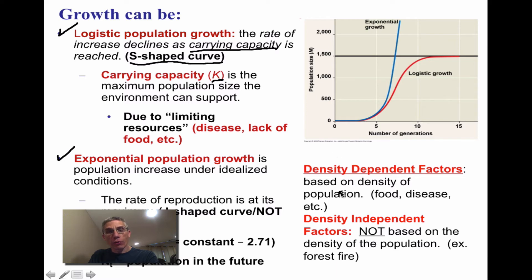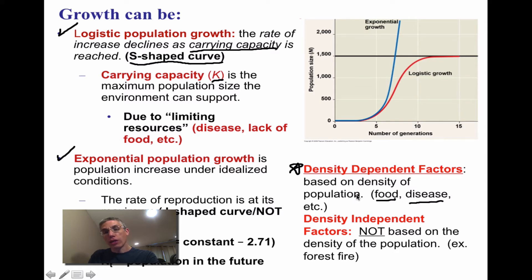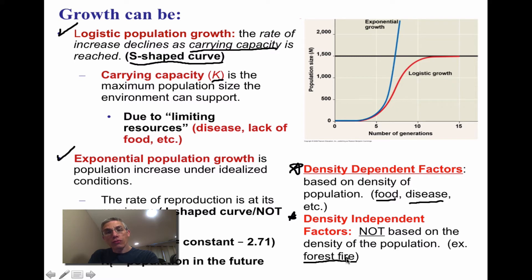Limiting resources can be identified as density-dependent factors — such as food availability, water, and disease — where there's only so much the environment can provide. Density-independent factors, like a forest fire, change population numbers regardless of population density. A forest fire will take out a portion of the population no matter how many members exist.